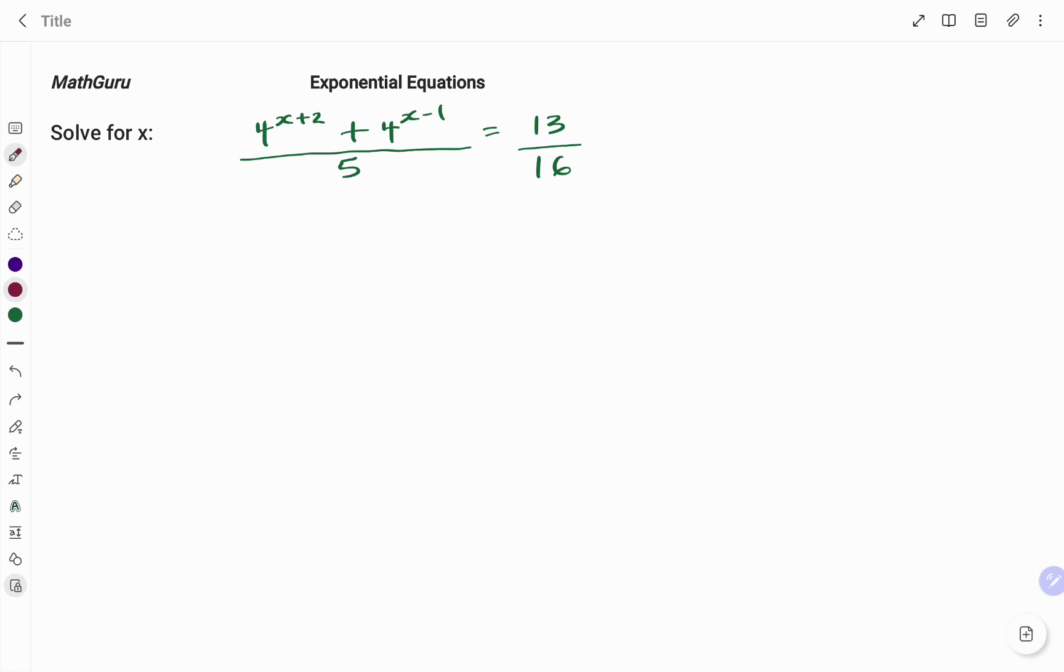I have 4 to the power of x plus 2 plus 4 to the power of x minus 1 all divided by 5 on my left hand side equals 13 over 16.